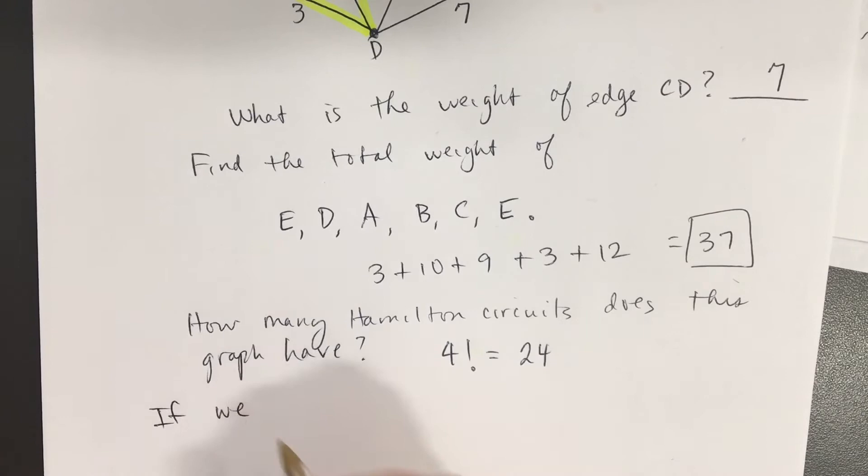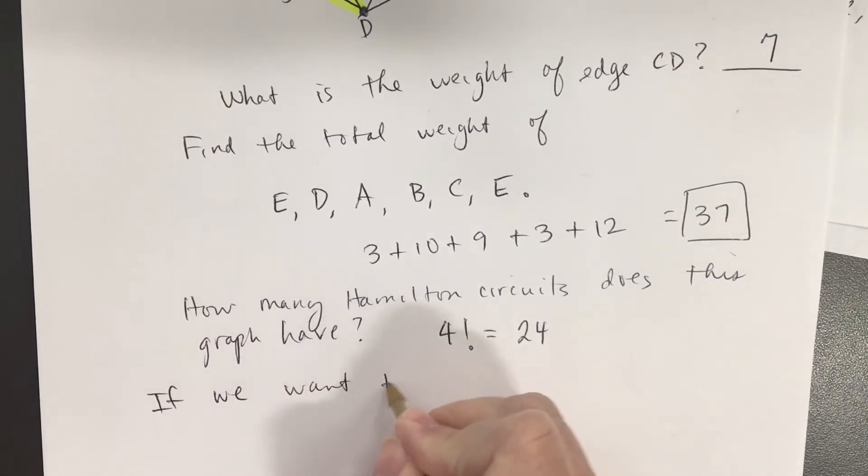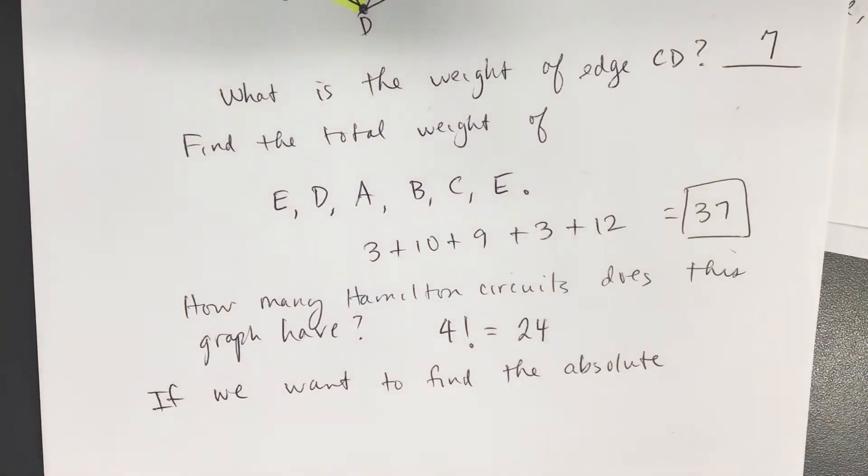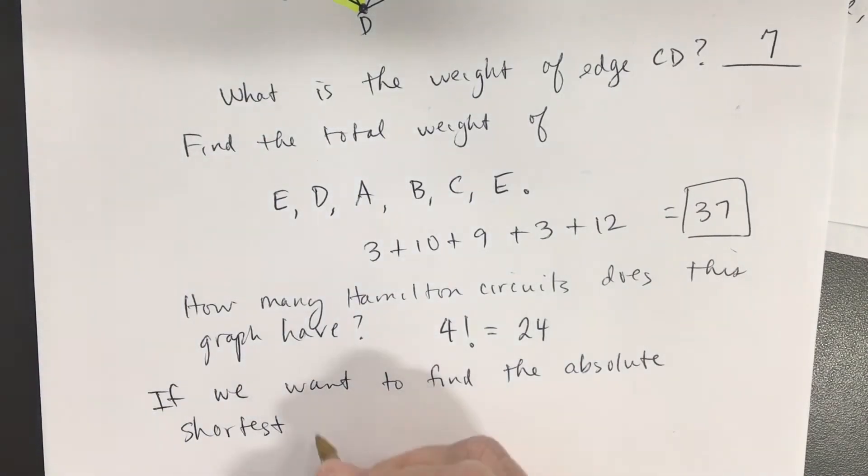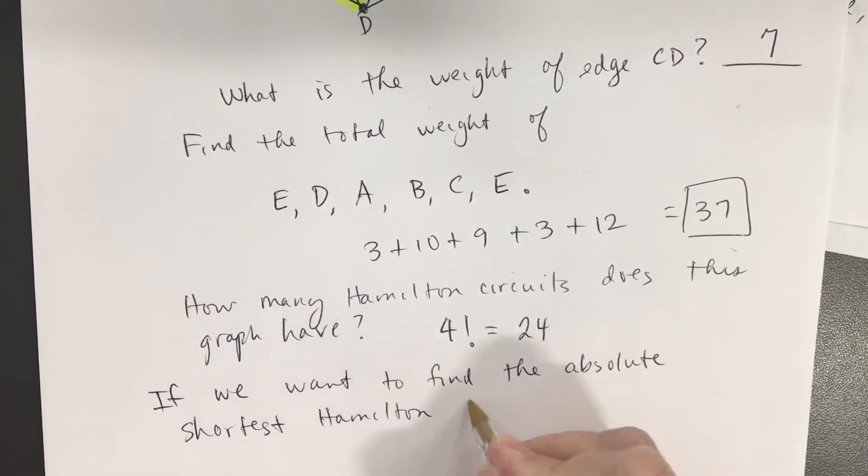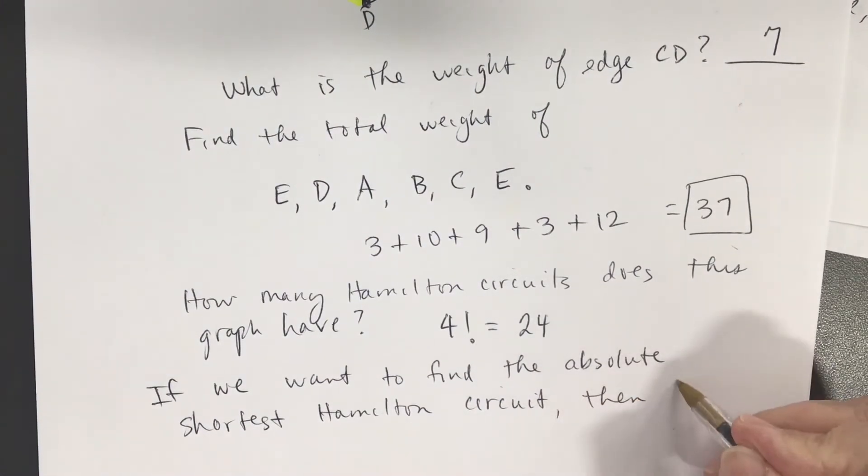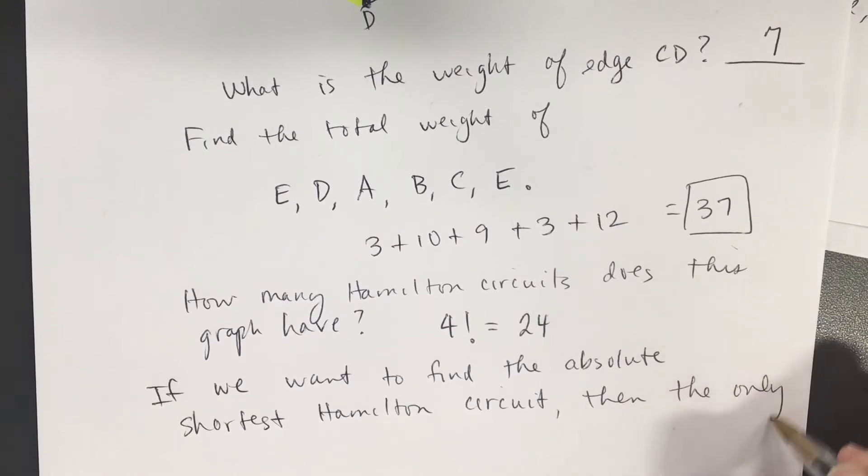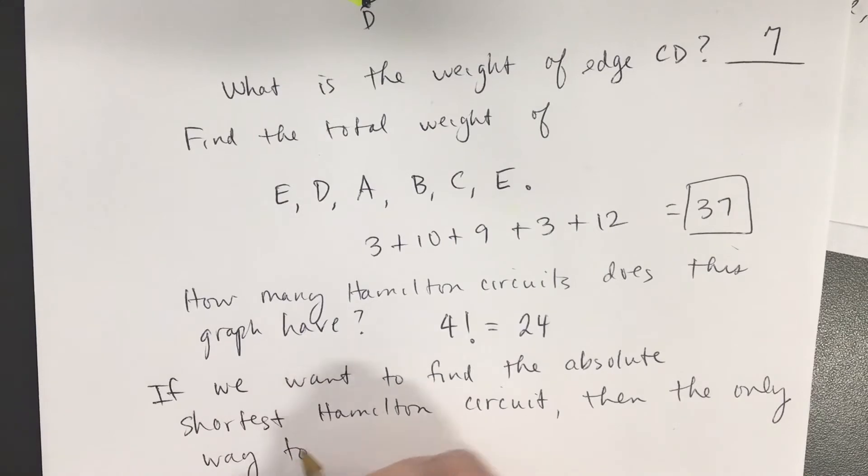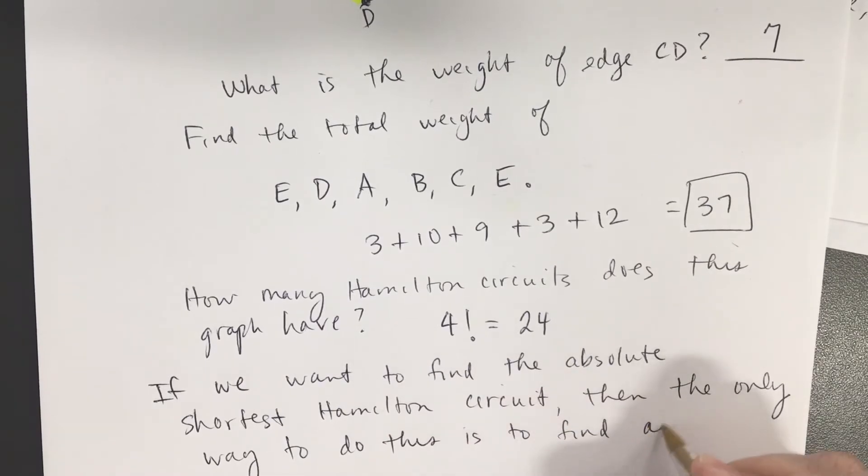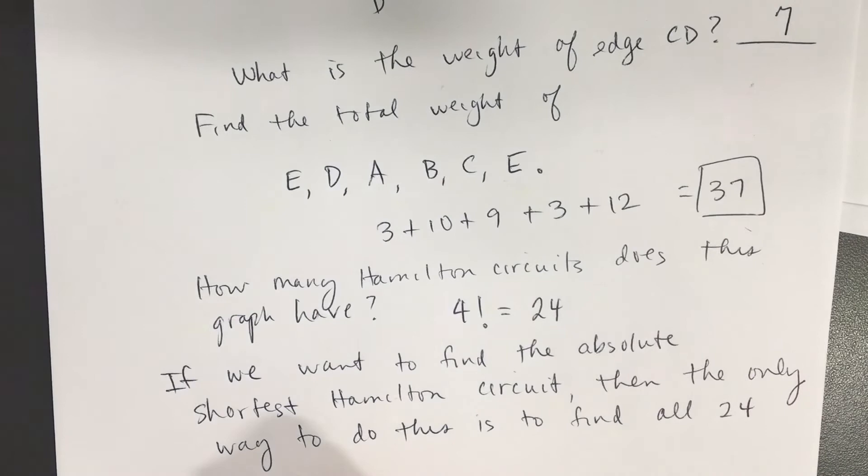If we want to find the absolute shortest, smallest, minimum cost, whatever we're going to call it, the absolute shortest Hamilton circuit, then the only way to do this is to find all 24 Hamilton circuits.